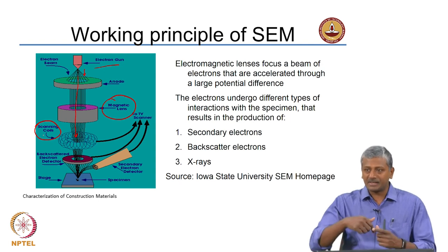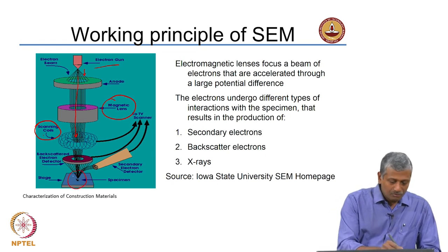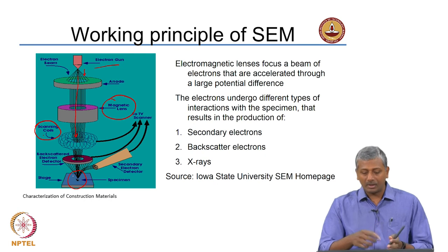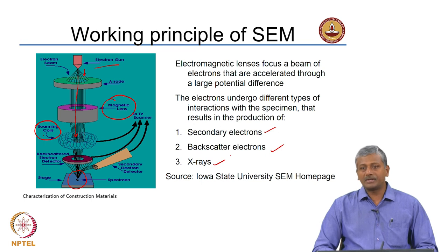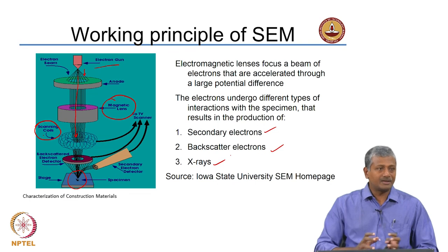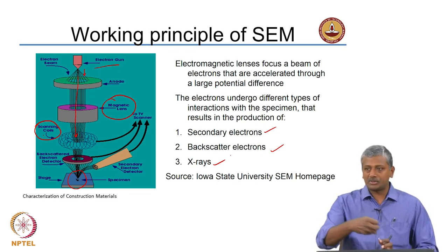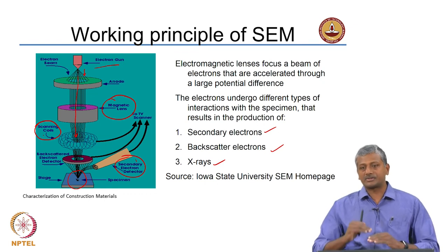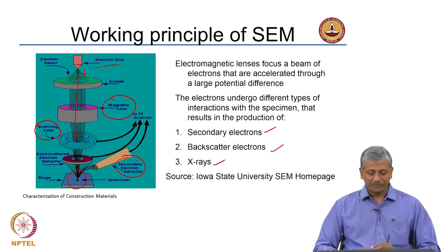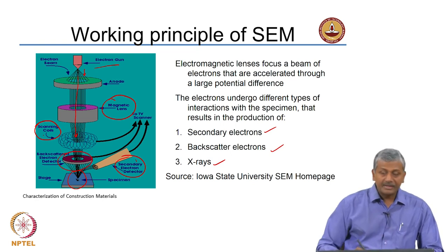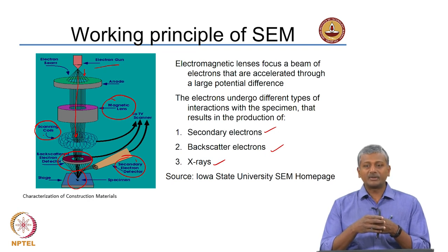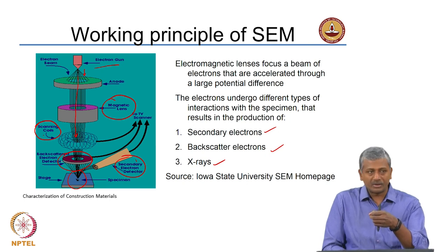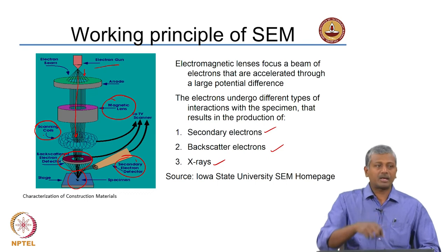As the electron beam scans line by line, interactions between the electrons bombarding the specimen and the specimen itself lead to the generation of backscatter electrons, secondary electrons, and X-rays. These are detected using suitable detectors placed at critical locations around the specimen. The secondary electron detector is placed at a narrow angle because secondary electrons are low-energy. The backscatter detector is placed almost around the optic axis, since high-energy electrons undergo elastic rebound almost straight back up.